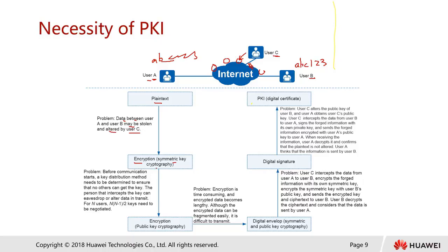The problem with symmetric encryption is that before communication starts, a key distribution method needs to be determined to ensure no one else can get the key. The person who intercepts the key can eavesdrop or alter the data in transit. For n users, we use the formula n × (n−1) ÷ 2 to calculate the number of keys that need to be negotiated.